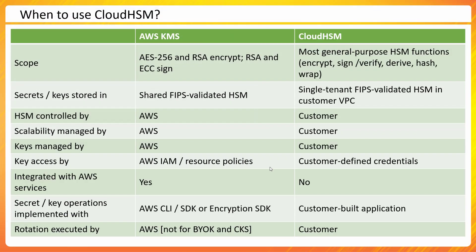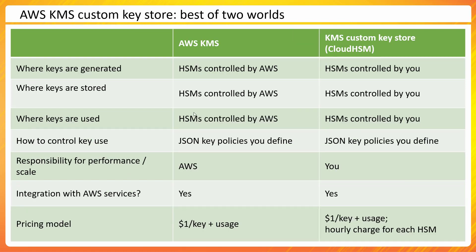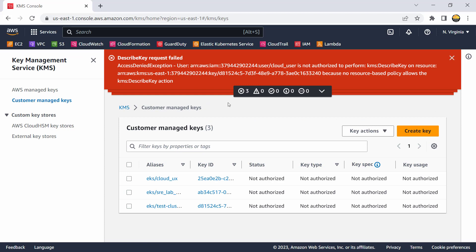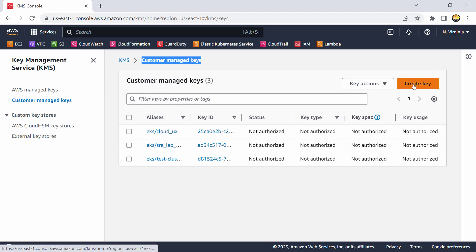What if I have a cluster but I don't want to manage keys through my own application — I want to manage keys through KMS itself, to get resource policies and integration with various AWS services? That's where we get the best of both worlds: KMS Custom Key Store. Let me go back to the console and navigate to Key Management Service. When creating a key, I can specify that I want to leverage the Cloud HSM cluster.